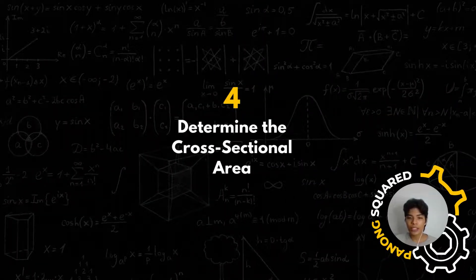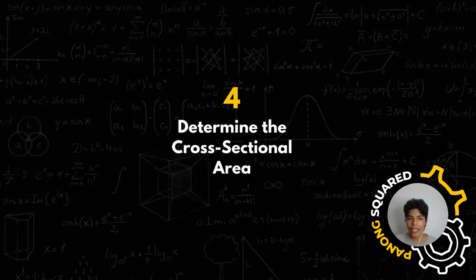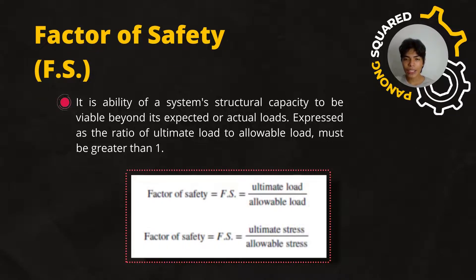The fourth and the last step is to determine the cross-sectional area of the link A and B. Since we are asked to determine the cross-sectional area, then we are going to introduce the factor of safety. When we say factor of safety, it is the ability of a system's structural capacity to be viable beyond its expected or actual loads. It is expressed as the ratio of ultimate load to allowable load and it must be greater than 1.